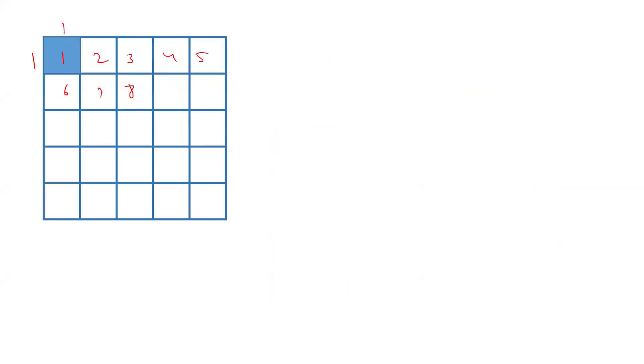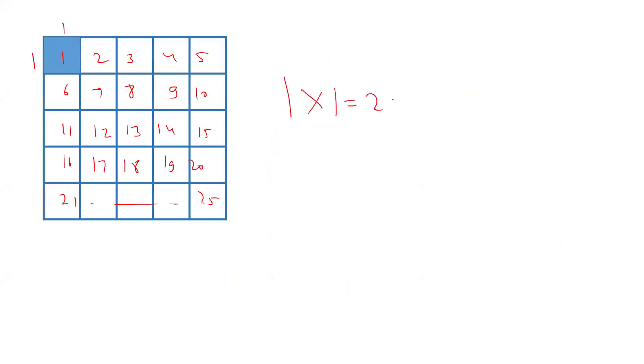Number 1: these are 1 by 1 squares and of course there are 25 such squares — 1, 2, 3, 4, 5... counting up to 25. So yes, there are 25 squares of 1 by 1.